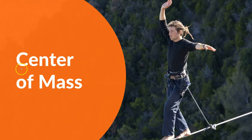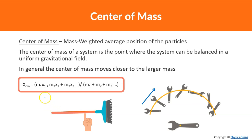Welcome back. Today we are going to be talking about center of mass — a topic that has become pretty important recently. Center of mass is the mass-weighted average position of the particles in a system. The center of mass of a system is the point where the system can be balanced in a uniform gravitational field.